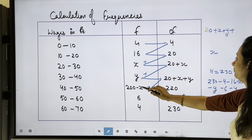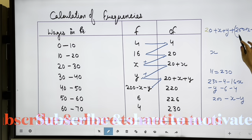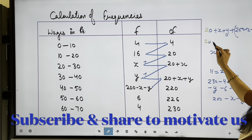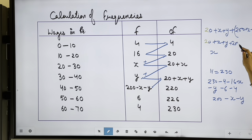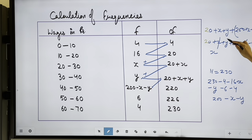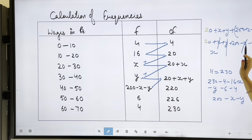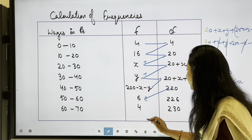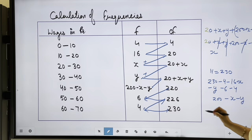Opening the bracket: 200 minus x minus y becomes 20 plus x plus y. Then 200 minus x minus x cancels, and y minus y cancels. That gives 220, plus 6 = 226, plus 4 = 230. The table is verified and clear.